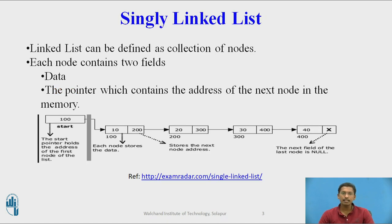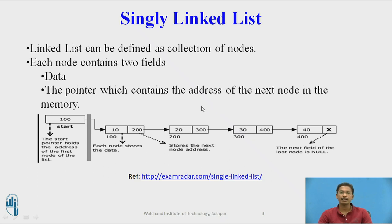Now this is a singly linked list. A linked list can be defined as a collection of nodes, where each node contains two fields: a data field and a pointer which points to the next node.